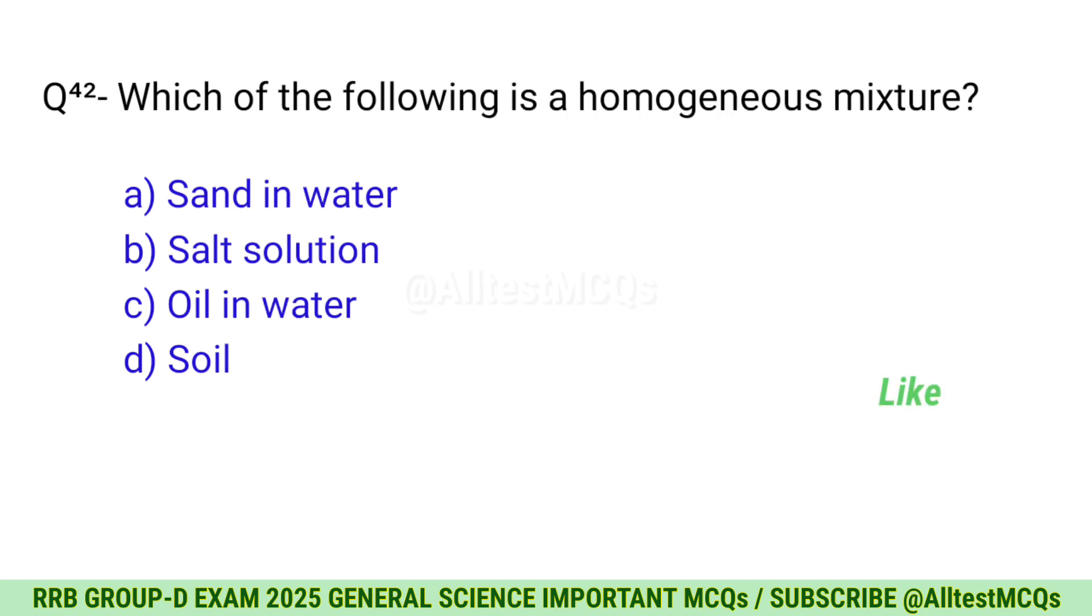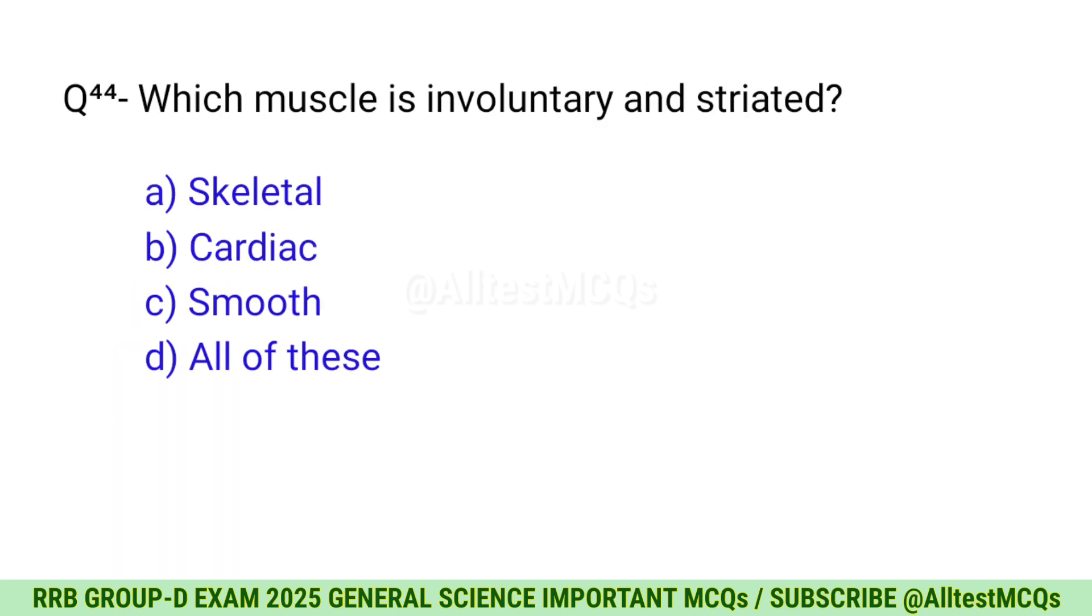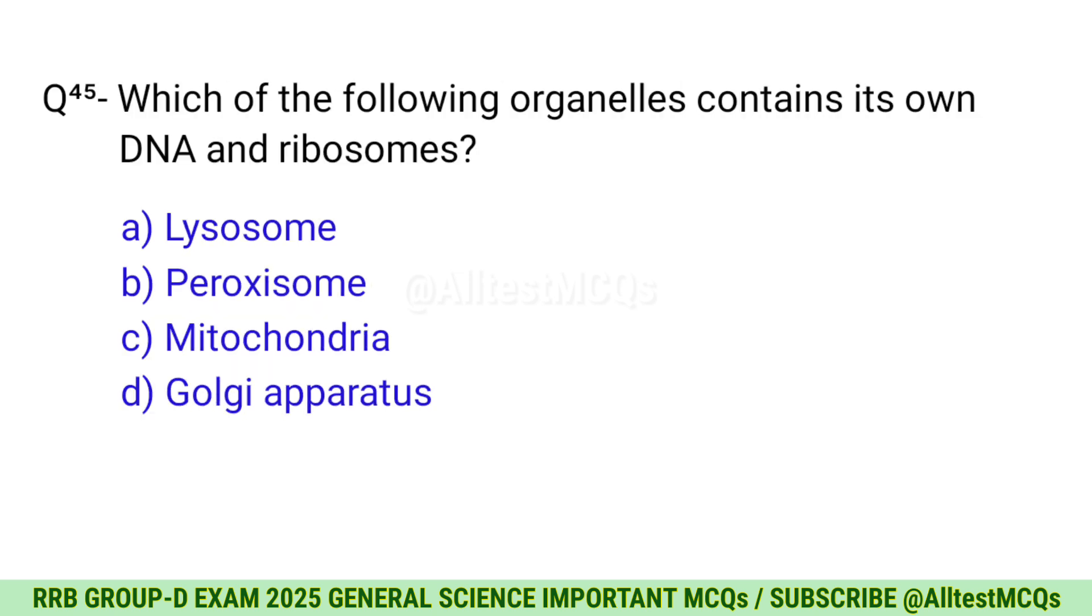Question 41: The maximum amount of solute that can be dissolved in solvent at a specific temperature is called? Correct option is A, Solubility. Question 42: Which of the following is a homogeneous mixture? Correct option is B, Salt solution. Question 43: Which cell organelle is responsible for storage of water and nutrients? The right option is A, Vacuole.